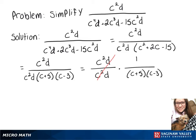Now this part goes away because that's just equal to 1, which leaves us with 1 over c plus 5 times c minus 3. That's one correct way to write the answer, but if you wanted to multiply the bottom out, then we would have 1 over c squared plus 2c minus 15, which is still right.